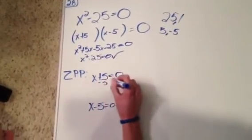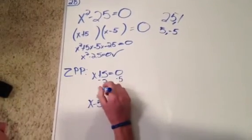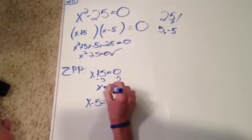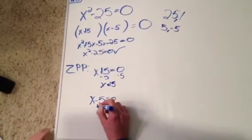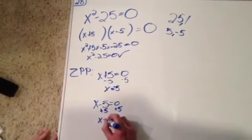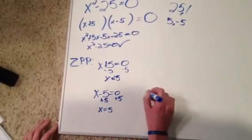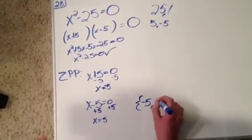We'll subtract 5 from both sides so it balances out, and we'll have x equals negative 5. We'll add 5 to both sides, and we'll have x equals 5. So our solution is negative 5 and 5.